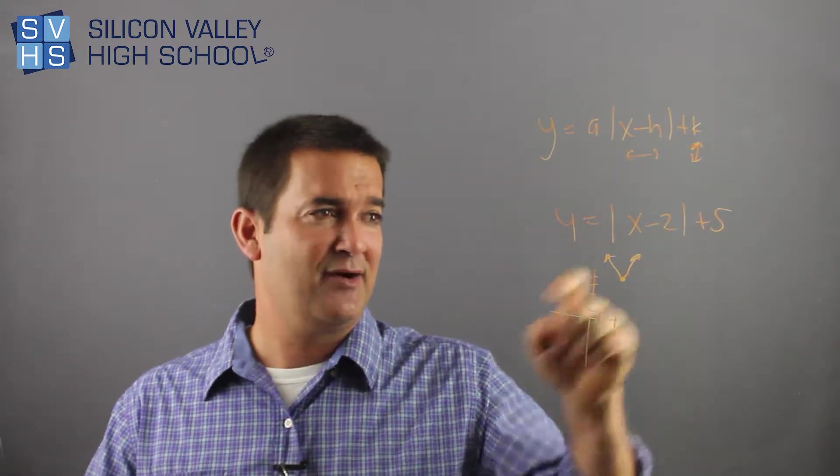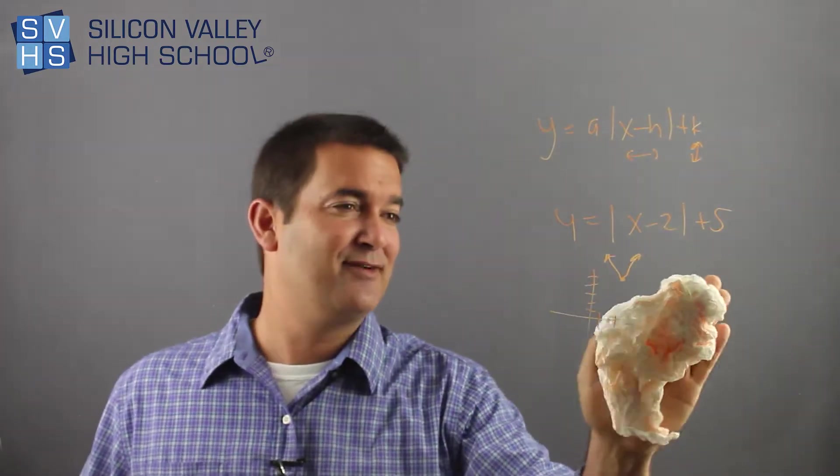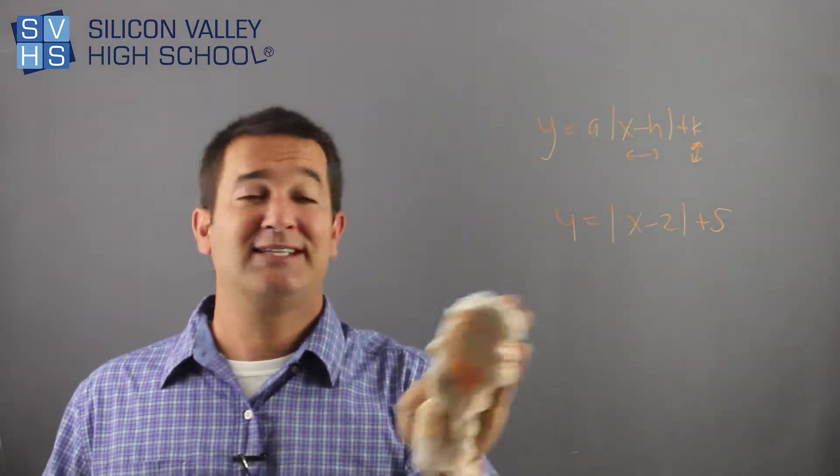So this is a little counterintuitive. The outside's easy. Up 5, down, whatever. But the inside, don't forget the sign is opposite.